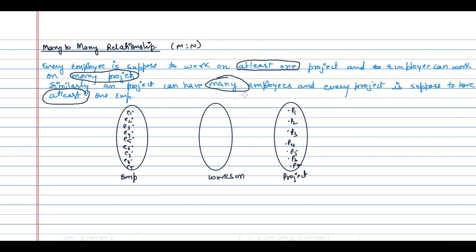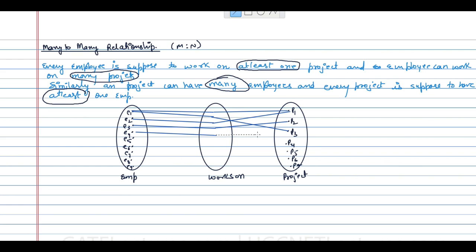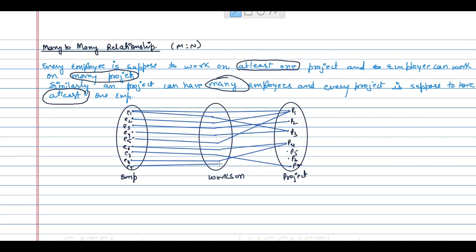For example, employee E1 is working on project P1. An employee can also work on many projects — E1 is also working on P3. Employee E2 is working on P1, E3 on P2, E4 on P3, E5 on P1, E6 on P4, E7 on P7, E8 on P4, and E9 on P7. Every employee is working on at least one project.